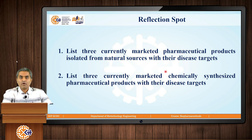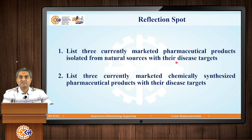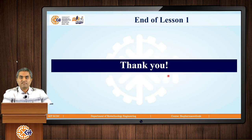This is all about the overview of the pharmaceutical industry. Now here is a reflection spot for you. List 3 currently marketed pharmaceutical products which are isolated from different natural sources with their disease targets. And the second exercise is to list 3 currently marketed chemically synthesized pharmaceutical products with their disease targets. This is the end of lesson 1. Thank you.